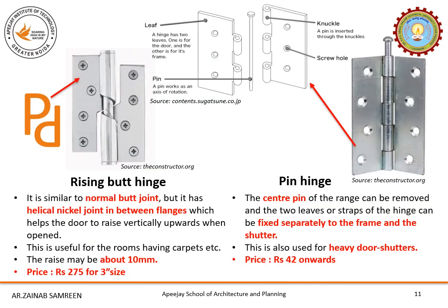There are various kinds of hinges used as per requirement. The other hinge is the rising butt hinge. As the name suggests, it is rising — meaning it lifts upward and is very similar to a butt hinge. It has two plates similar to a butt hinge with a helical knuckle joint in between, which helps the door to raise vertically upwards around 10 mm when you open the door. It is used for rooms which have carpets, and is a little higher in cost — a three inch size hinge is available at around rupees 275.